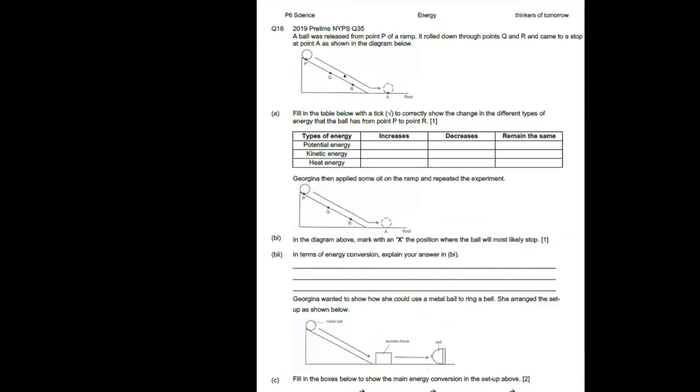From point P to point R, it was rolling down. When it was rolling down, what happens is that the potential energy should decrease because it's being converted to kinetic energy. So kinetic energy should increase.